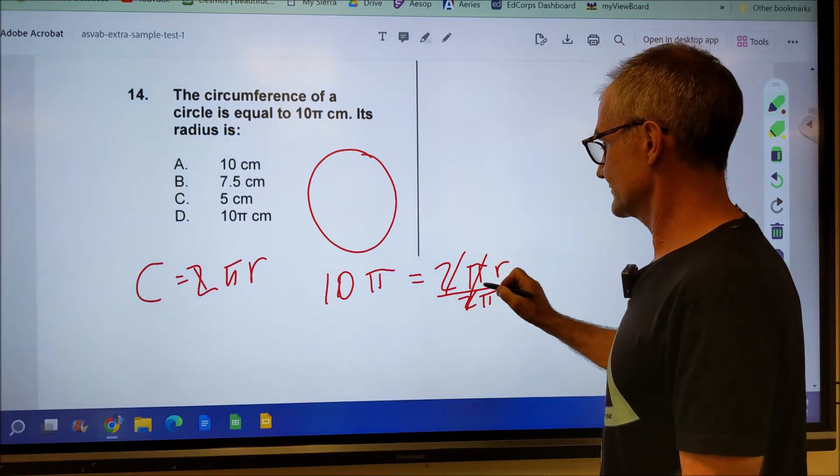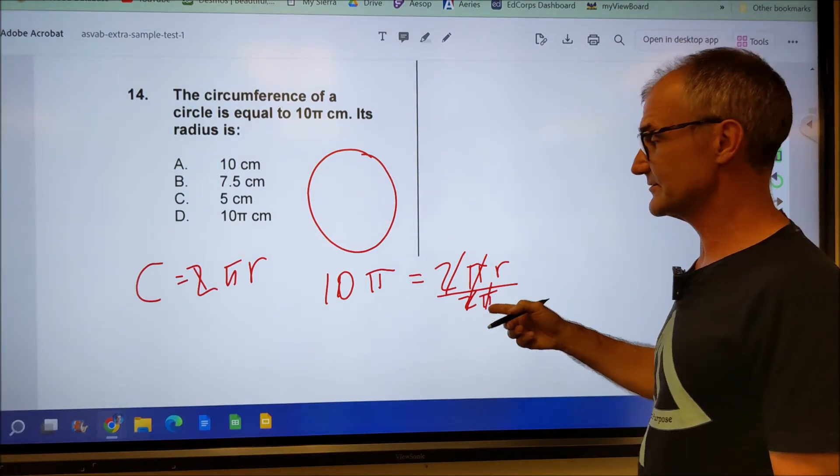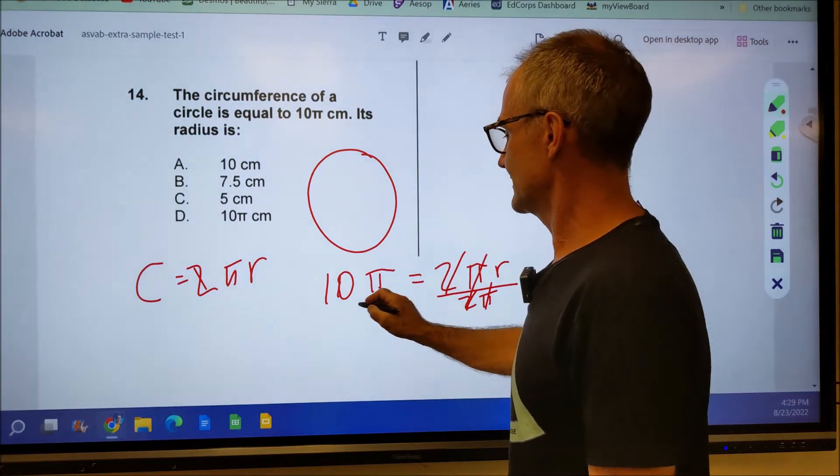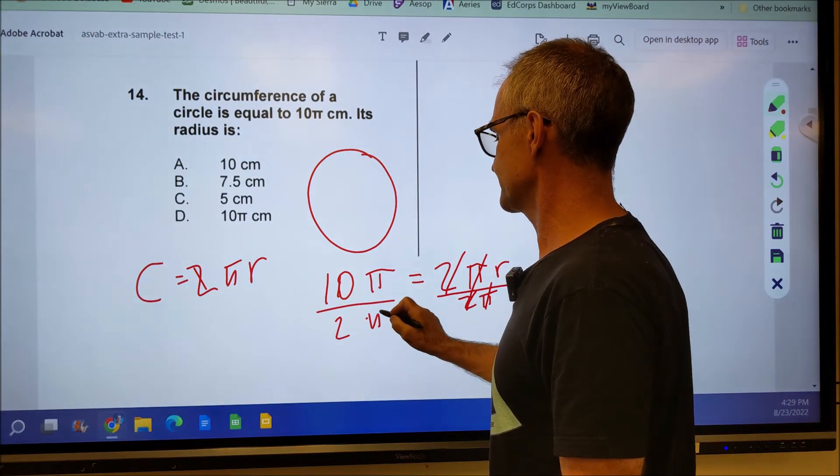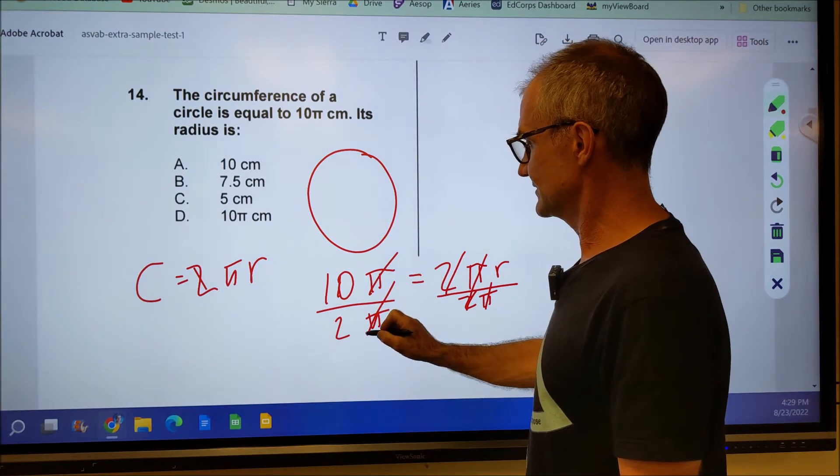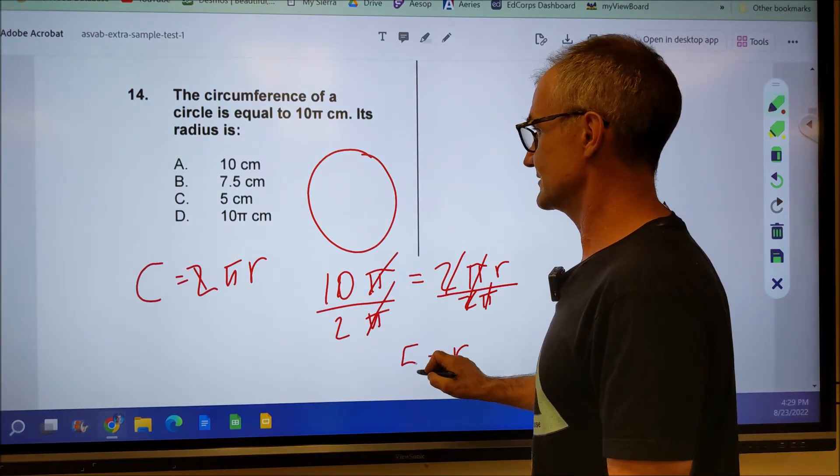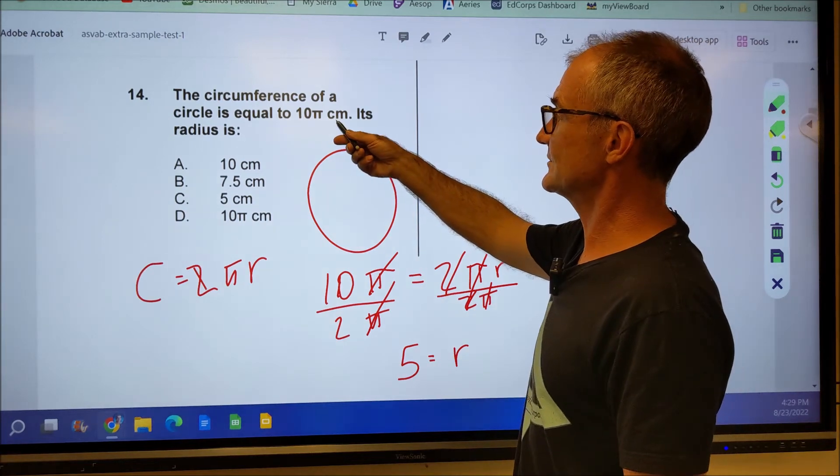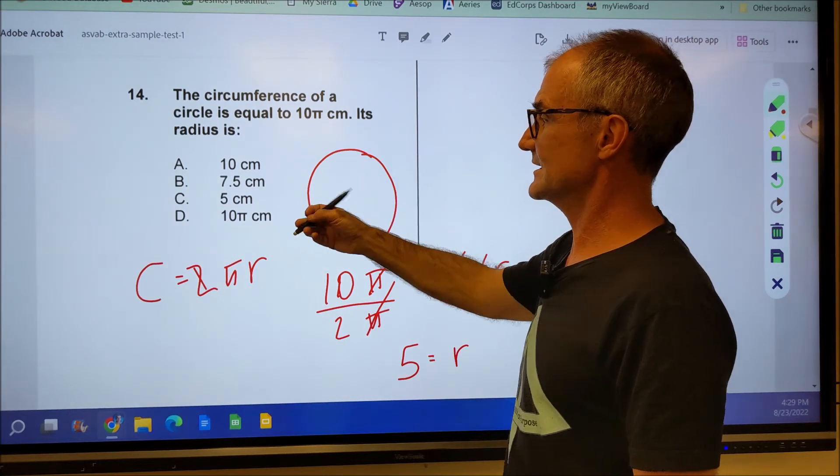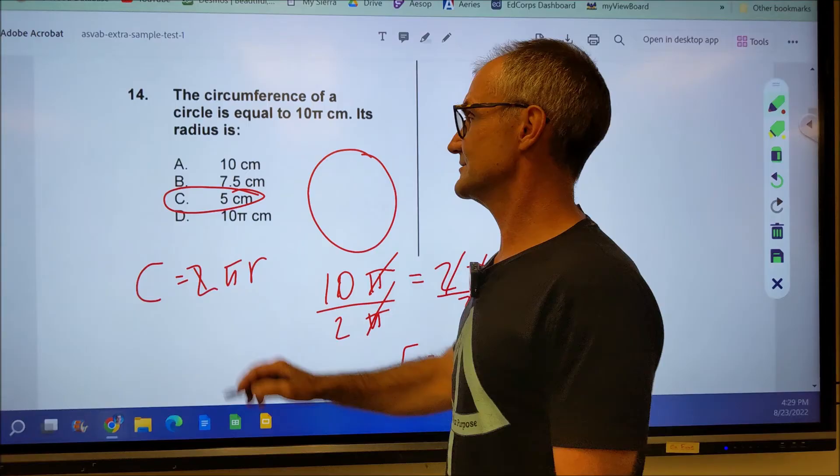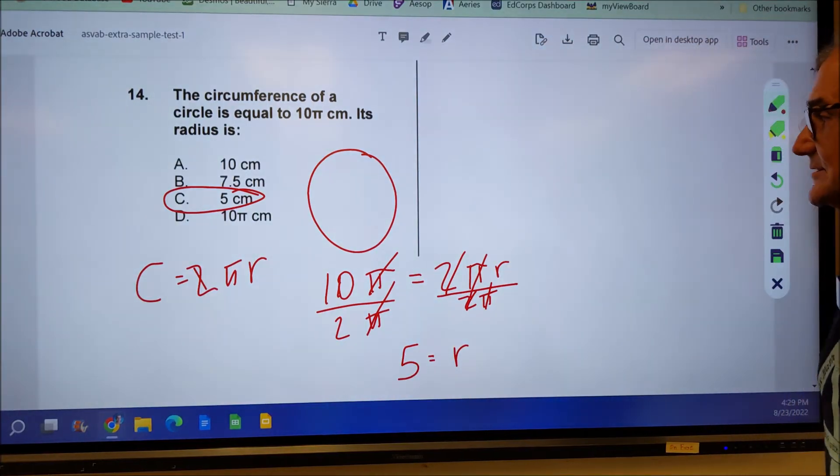I'm going to divide both sides by 2 pi. These will cancel. Those will cancel, giving me radius by itself. If I do that to the right side, I'll also have to do it to the left side. These pi's cancel. 10 divided by 2 is 5. So my radius is equal to 5. Let me double check my units. Circumference is given in centimeters, so my answer should be centimeters. And there's my answer there, 5 centimeters.